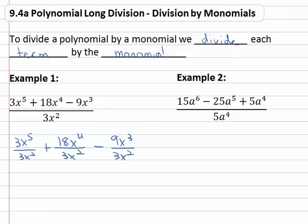And then now we can reduce each fraction made up of monomials. So now we can divide, 3 over 3 reduces out and we're left with x to the subtracting exponents third power. 18 over 3 is 6 so we have plus 6x to the subtracting exponents second power. And 9 over 3 reduces to 3 so we have minus 3x subtracting exponents.